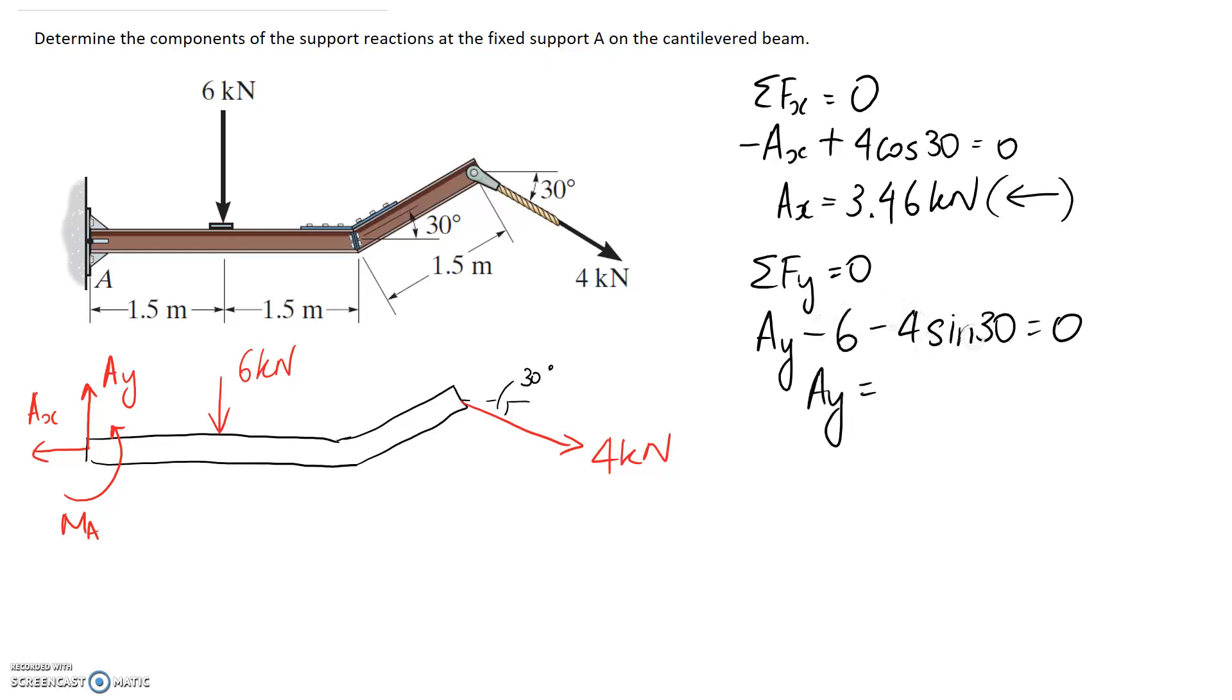And Ay is going to equal this flip to the other side which makes it positive and it comes out to be 8 kilonewtons. So this answer comes out positive that means the direction is correct on the diagram so it's going to be straight upwards.